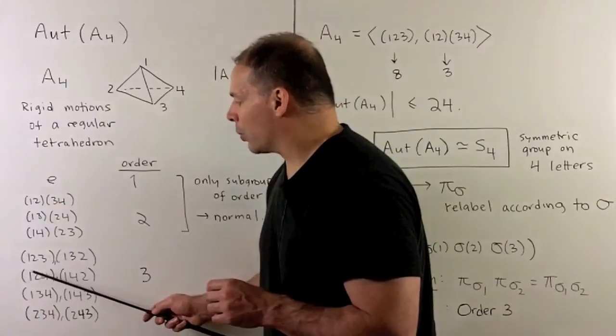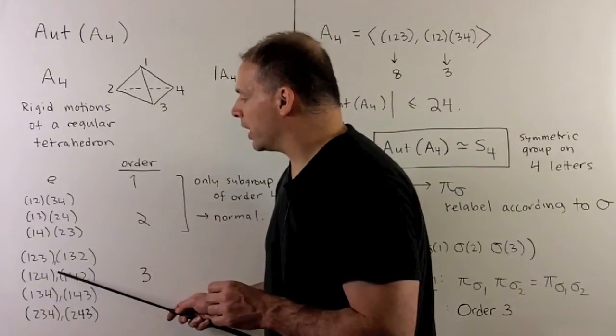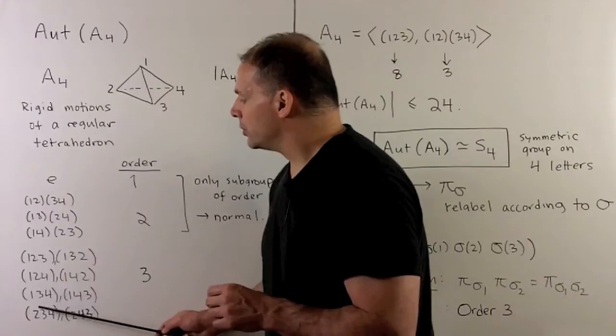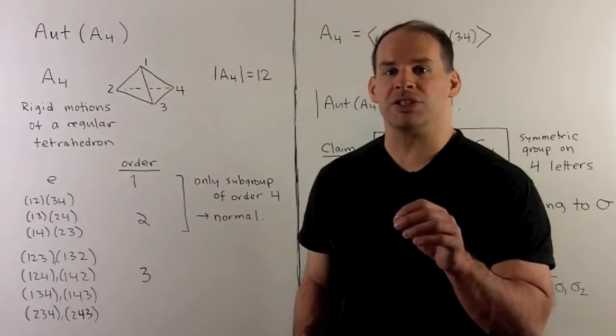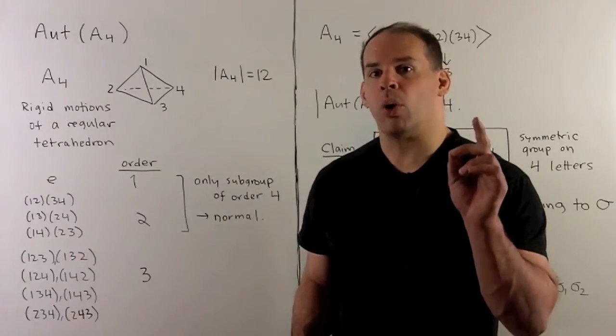If we consider (1,2,4), 3 has to go to 3. (1,3,4), 2 has to go to 2. (2,3,4), 1 has to go to 1. So we see that our σ is just the identity, so we have one to one.